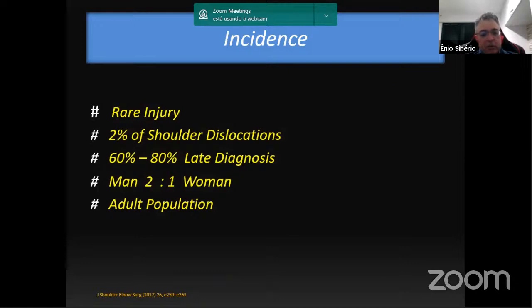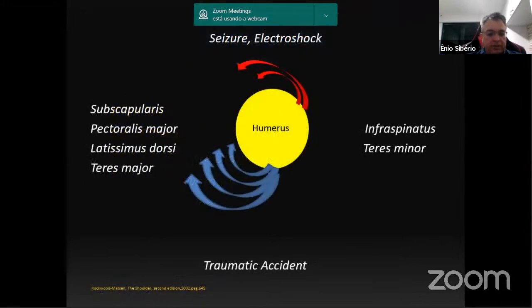This infrequency means that over 50% of cases are not diagnosed at the first medical consultation. It occurs more frequently in men than in women, with a ratio of 2 to 1, and is more frequent in the adult population. Most dislocations — 67% — were produced by a traumatic accident, with most of the remainder produced by seizures. During seizures, the shoulder dislocates posteriorly because the internal rotation muscles are stronger than the external rotators.